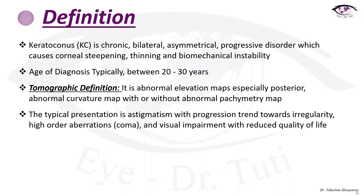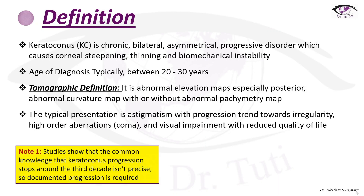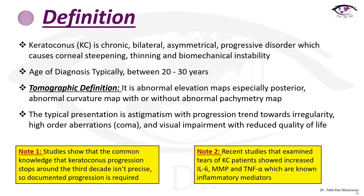The typical presentation of keratoconus is astigmatism with progression, irregularity, high-order aberration, and visual impairment with reduced quality of life. Studies show that the common knowledge that keratoconus progression stops around the third decade is not precise, so documented progression is required.